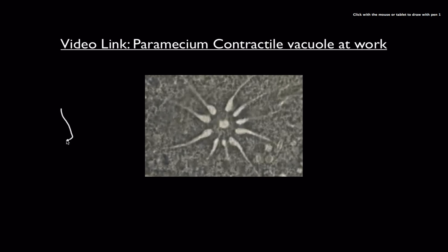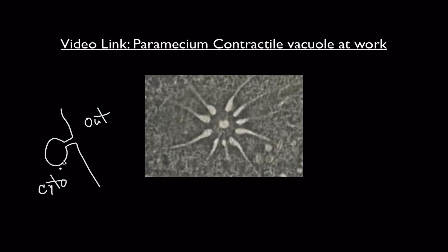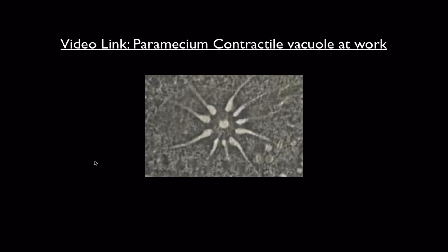In a side view, you can see the outside environment, the cytoplasm on the inside, and the contractile vacuole. The feeder arms pump water into the vacuole, and when it gets large enough it expels the water out through a pore. It's essentially a water pump for paramecia — very important for organisms that have to survive in fresh water.